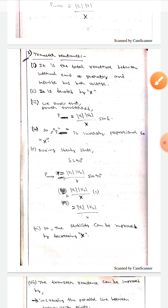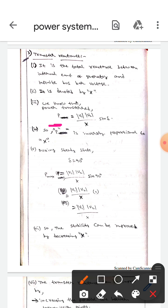We already know that P equals modulus of V1 into modulus of V2 by X into sin delta. Here there will be two voltage sources, V1 and V2. So we will take modulus of V1 into V2.